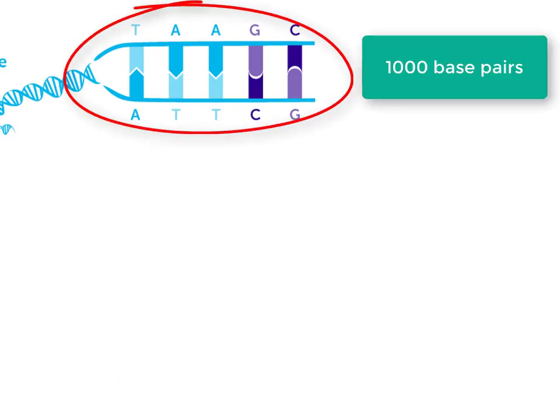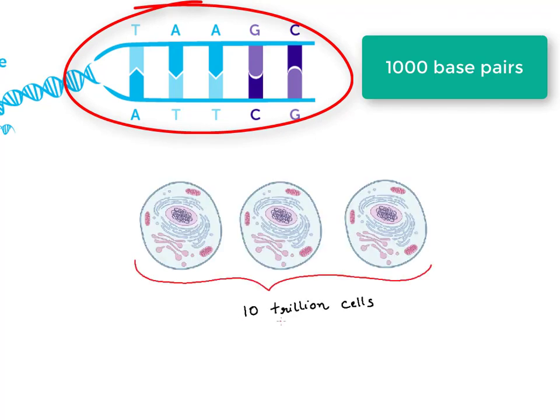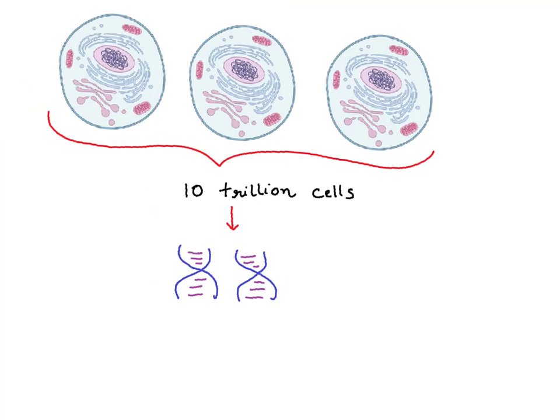Each gene has roughly thousand base pairs arranged in a linear sequence of letters A, T, C, G. And it is mind-boggling to imagine that these couriers of traits are present in every single of our 10 trillion cells. And total weight of these bases in a human body is about 10 to 60 grams.